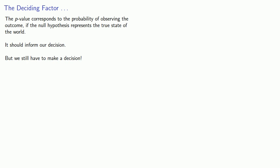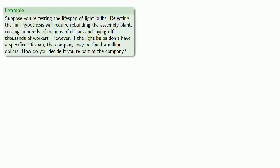We still have to decide whether to reject or fail to reject the null hypothesis. The p-value corresponds to the probability of observing the outcome if the null hypothesis represents the true state of the world. It should inform our decision, but we still have to make a decision. In order to do that, we need to consider the consequences if we're wrong. This context does not come from mathematics, but from what you know about how the real world operates.